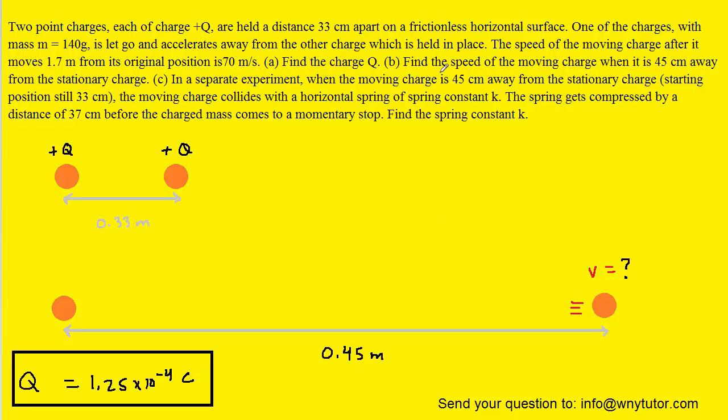Part B is very similar. We're asked to find the speed when the charge is 45 centimeters away from the stationary charge. We've changed the distance to 0.45 meters and we're looking for the speed. The same concept applies.